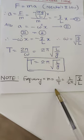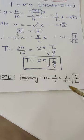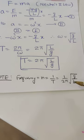Frequency, what do you write? n equal to 1 upon T. This is 1 upon 2π root of g by l.